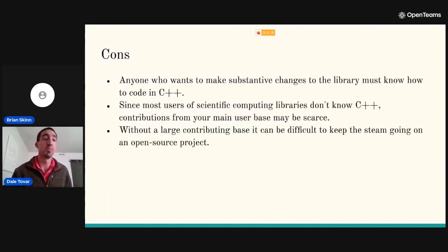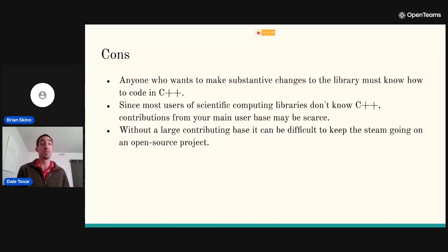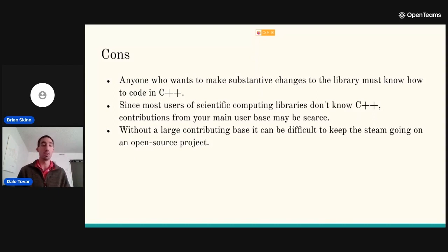The cons of this approach are similar to the first: anyone wanting to make substantive changes must know C++, and since most scientific computing users don't know C++, C, or Fortran, contributions from your main user base may be scarce. Without a large contributing base, it can be difficult to keep momentum on an open source project. As a long-term solution this is a great approach, but if you're just getting started it might have difficulties getting off the ground and attracting contributors.